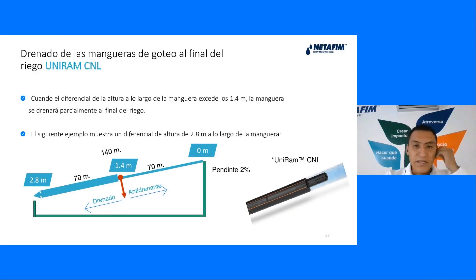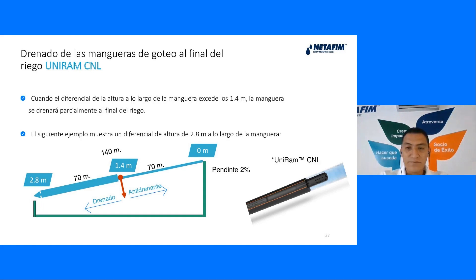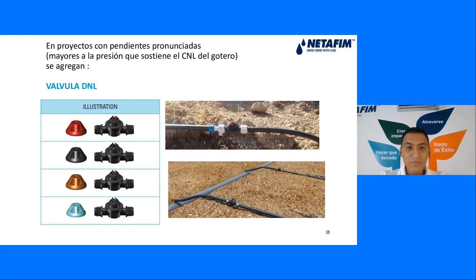También existen los DNL. Si tenemos un terreno con topografía de 0 a 1.4 metros de desnivel, metemos una DNL, que rompe la presión y nos asegura que todos los riegos sean homogéneos.